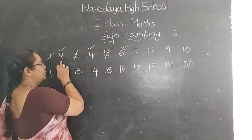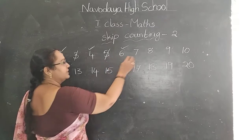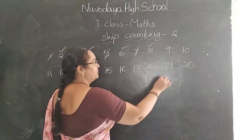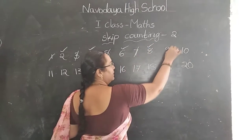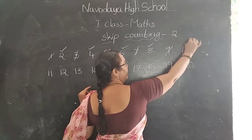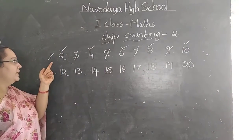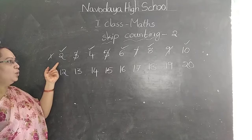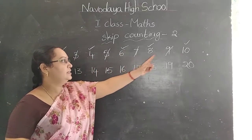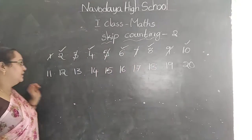We have to count 2, 4, 6. Leave 8, count 9 — number 9, leave 10. Skip counting of 2 means 2, 4, 6, 8, 10. Like this.